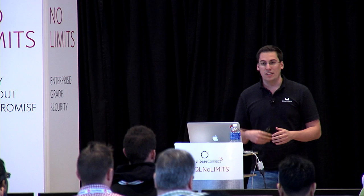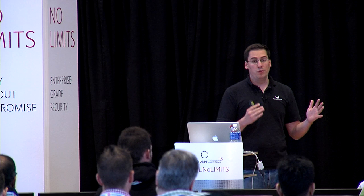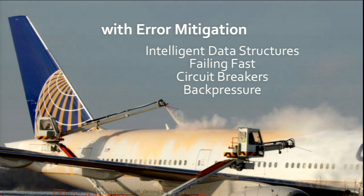There are techniques to mitigate errors upfront, like intelligent data structures — ring buffers and bounded queues. You should fail fast via load shedding to make sure that if your system is in an overload condition, you don't make matters worse. Techniques like circuit breakers help deal with failed remote systems. There is a related concept called backpressure, which you can use to fail fast and build those circuit breakers.